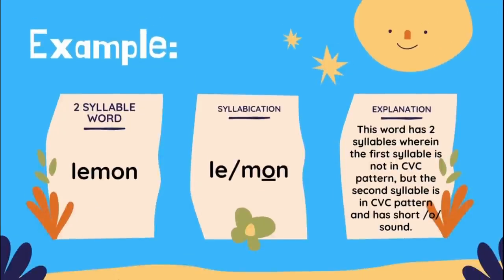Let's have another example. We have here the two-syllable word lemon. When we syllabicate the word lemon, we have le/mon. This word has two syllables wherein the first syllable is not in CVC pattern but the second syllable is in CVC pattern and has short O sound. And those are some examples of two-syllable words with short vowel sound.